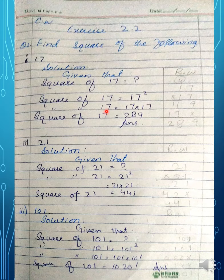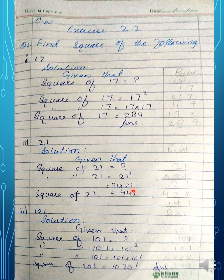Next part: find the square of the following numbers. Squaring means multiplying a number by itself two times. Square of 17: 17 × 17 = 289. Square of 21: 21 × 21 = 441. These are the solutions for finding the square of the given numbers.